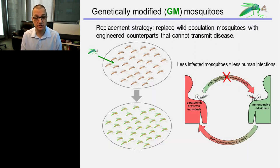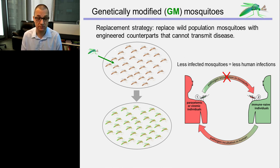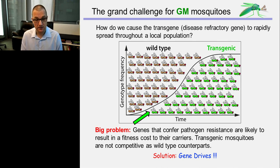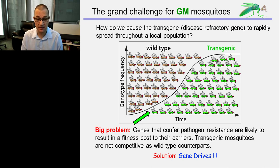So the logical conclusion is: if we can release these genetically modified mosquitoes in the wild and have them replace the wild-type mosquitoes, we will have fewer infected mosquitoes and fewer human infections, blocking some diseases or at least reducing their incidence. But there is a big problem — how do you spread transgenic or disease-refractory genes through the population? Genes that are foreign, which is why they're called transgenes, obviously reduce the fitness of the carriers. So transgenic mosquitoes are also not competitive with wild-type mosquitoes and will not be able to spread; they just get diluted and fall out of the population.